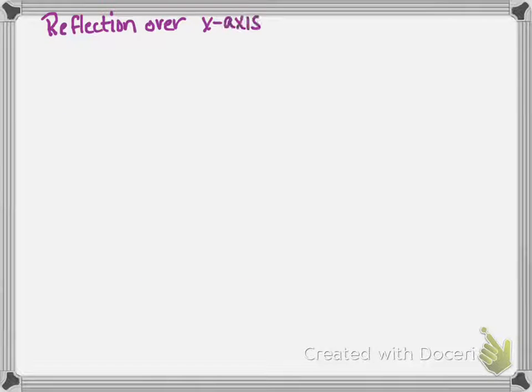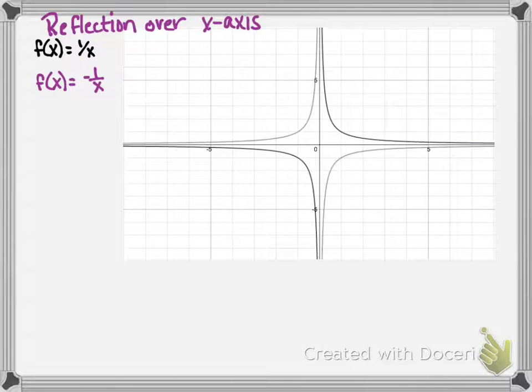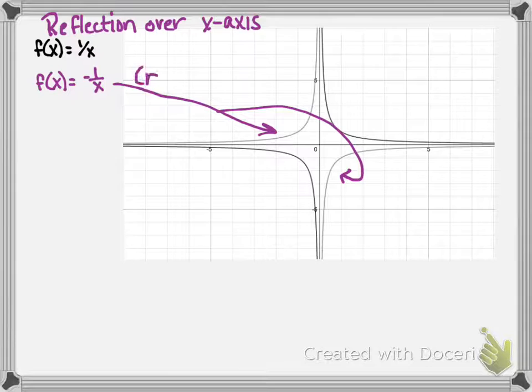Reflection over the x-axis. f of x equals 1 over x is our starting point. f of x equals negative 1 over x, so the negative out front, is our reflection. We see our reflected function in purple. The negative means you're reflecting over the x-axis.